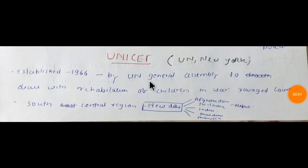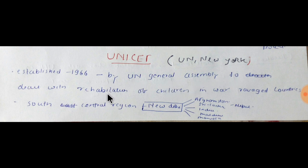UNICEF headquarters is where United Nations is — New York. It was established in 1946 by the United Nations General Assembly to deal with the rehabilitation of children in war-ravaged countries. So basically, the establishment was for rehabilitation of children in war-ravaged countries.